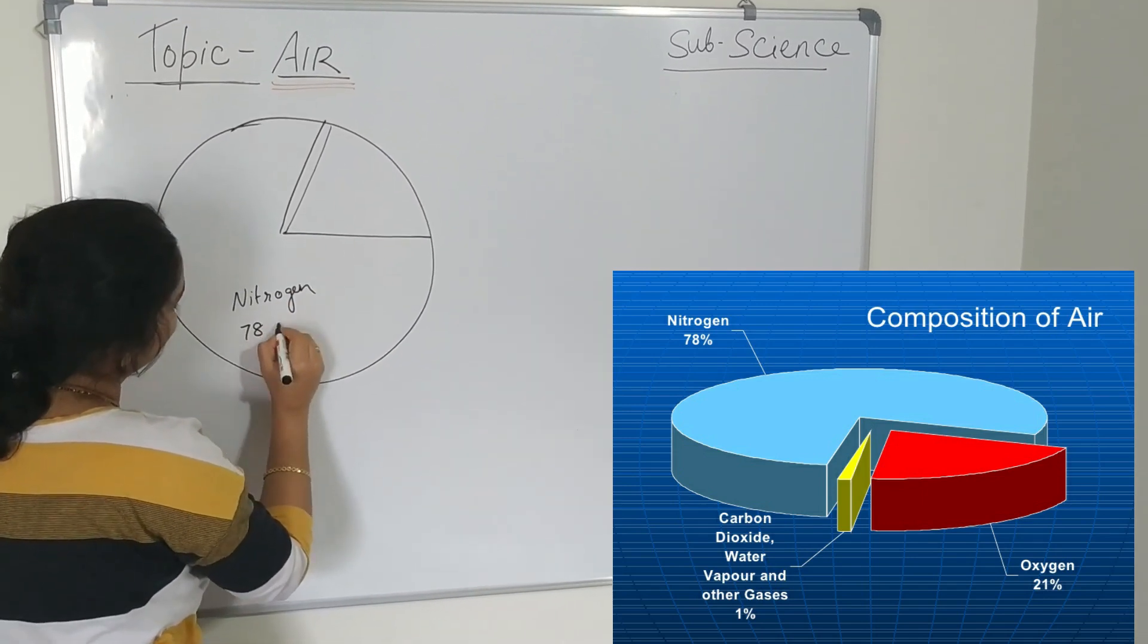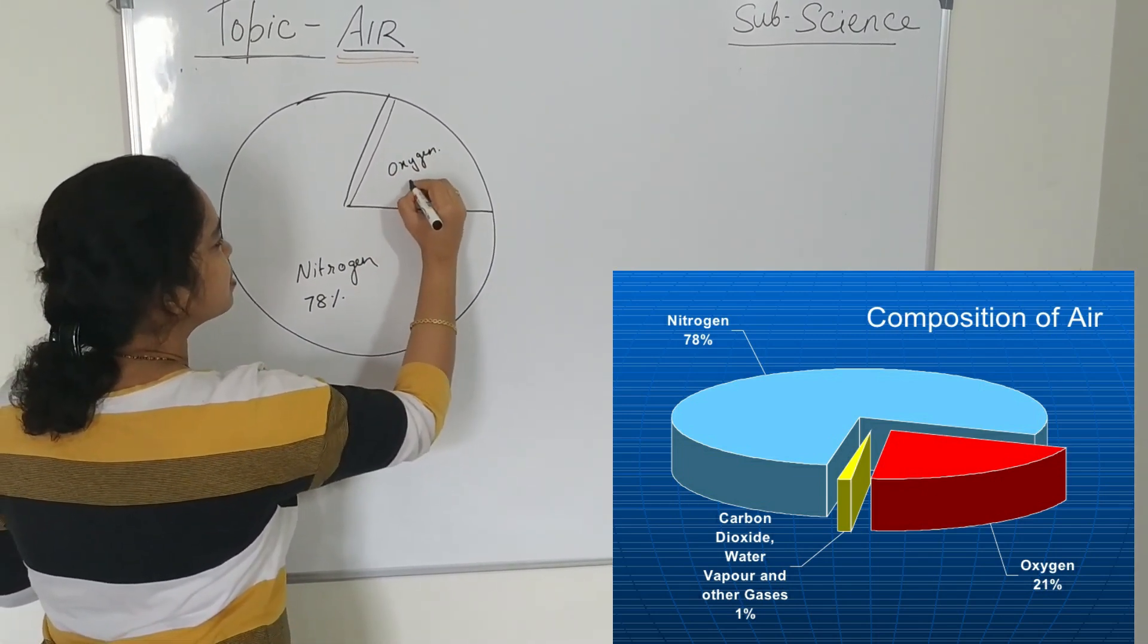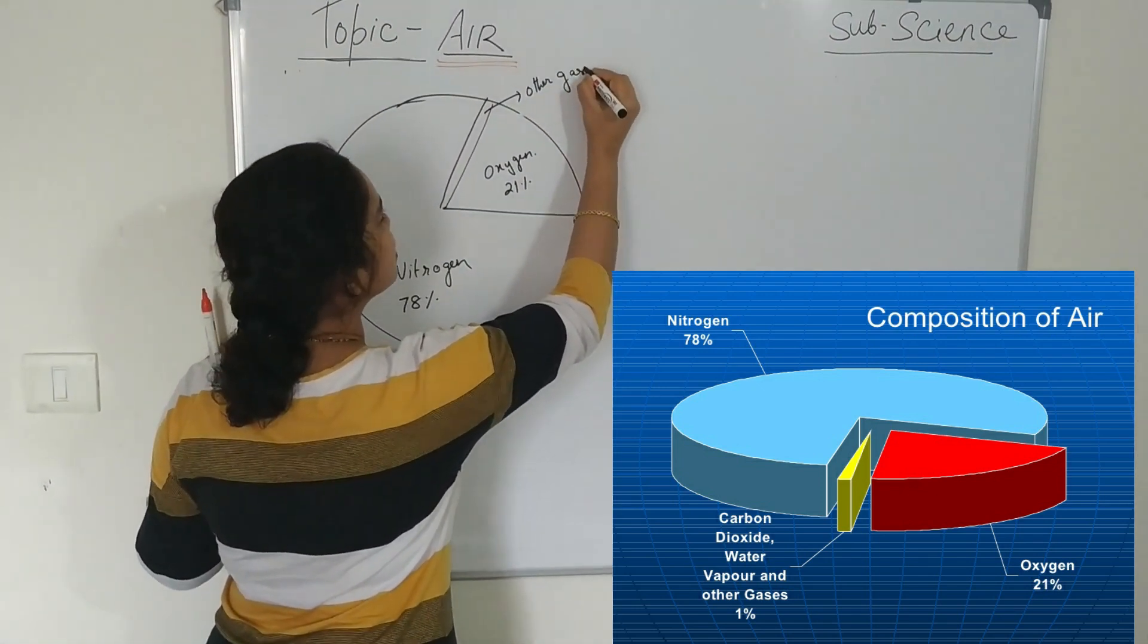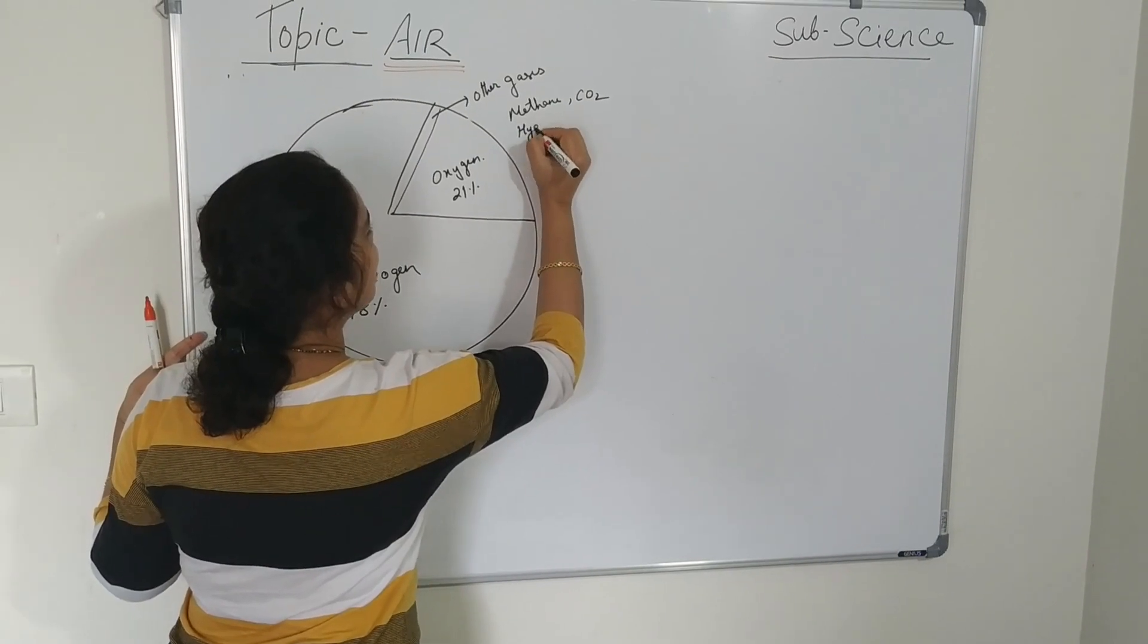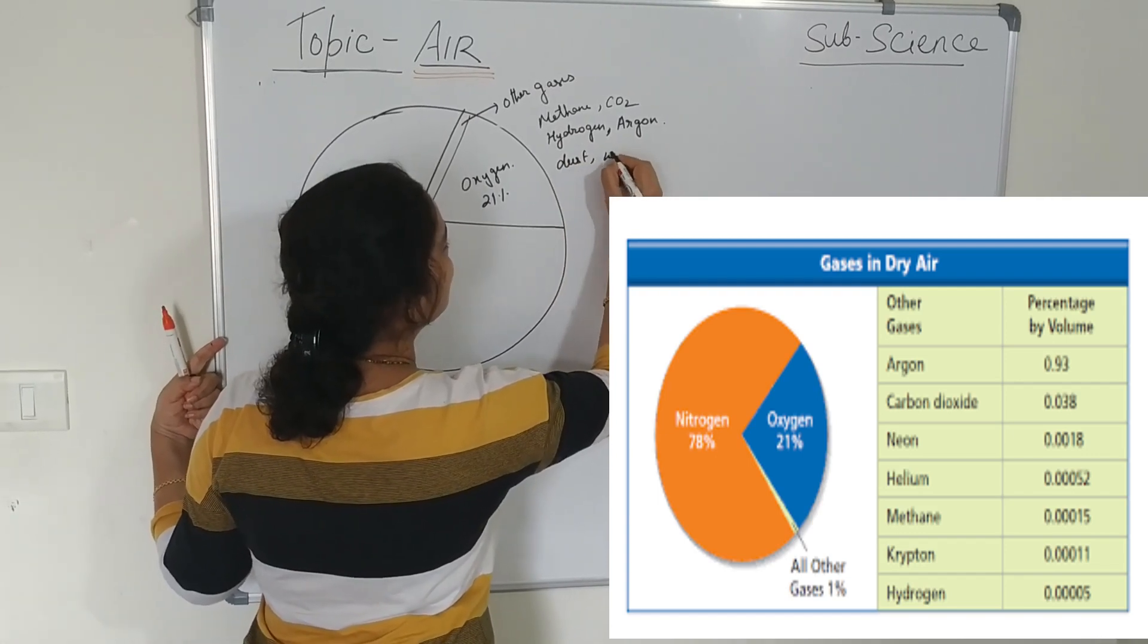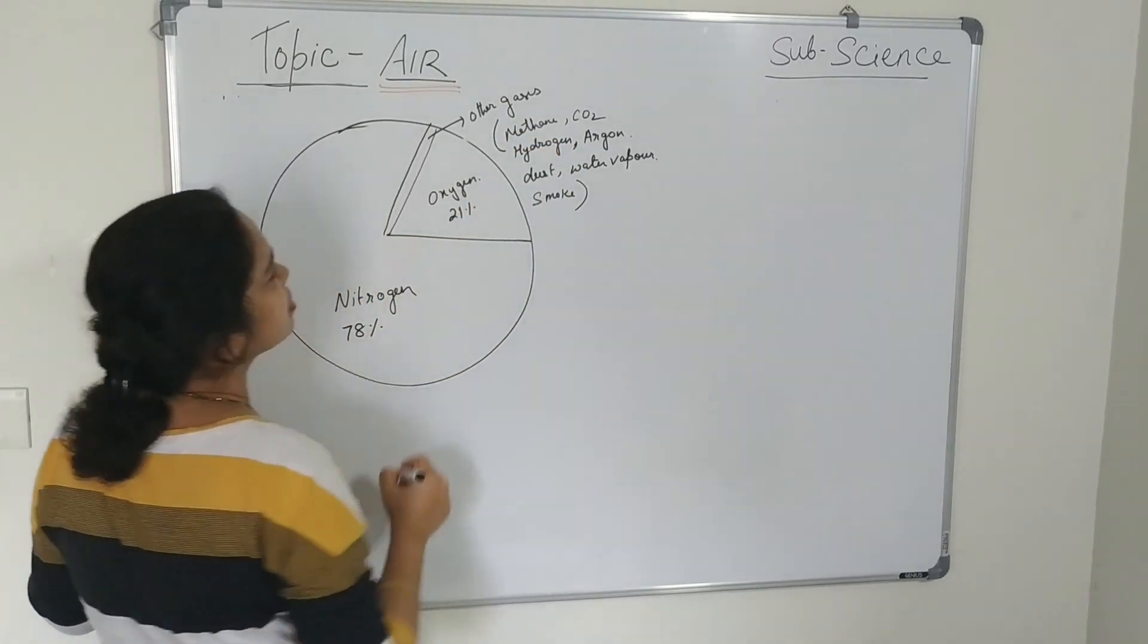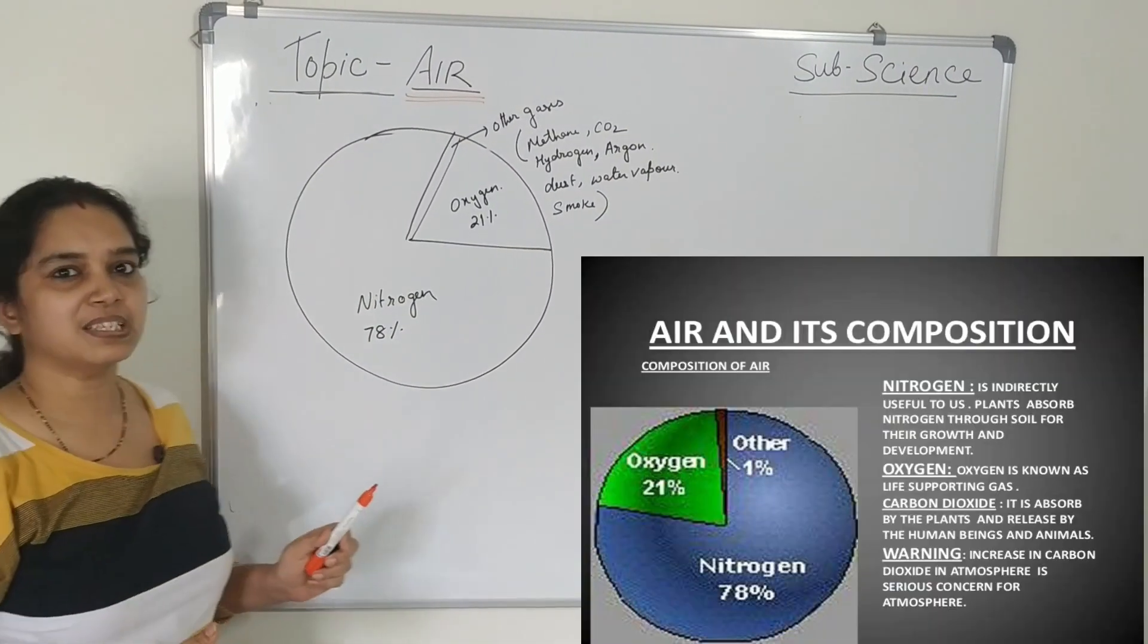Nitrogen gas constitutes about 78%. And oxygen constitutes 21%. And the rest, one rest, all are other gases. Other gases like methane, carbon dioxide, hydrogen, argon, dust particles, water vapour, smoke. They contain a, in very less amount in the air. So air basically is a mixture of gases.